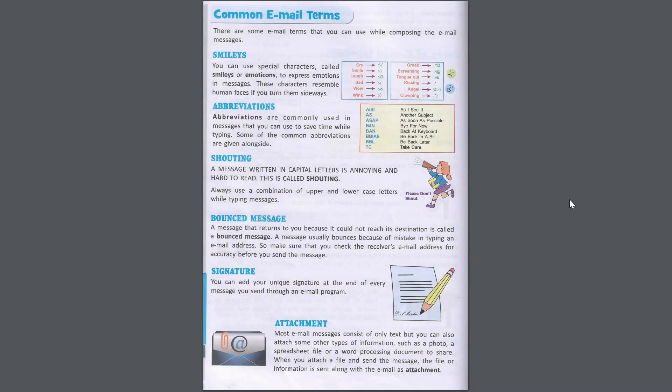Common Email Terms. Smilies: you can use special characters called smileys or emoticons to express emotions in messages; these characters resemble human faces if you turn them sideways. Abbreviations are commonly used in messages to save time while typing. Some common abbreviations are: AISI – As I see it; AS – Another subject; ASAP – As soon as possible; B4N – Bye for now; BAK – Back at keyboard; BBIAB – Be back in a bit; BBL – Be back later; TC – Take care. Shouting: a message written in capital letters is annoying and hard to read — this is called shouting. Always use a combination of upper and lower case letters while typing messages.